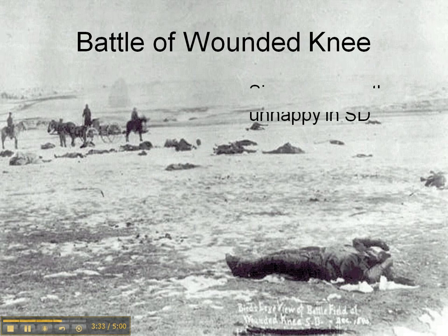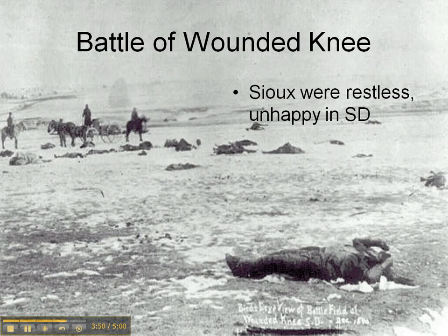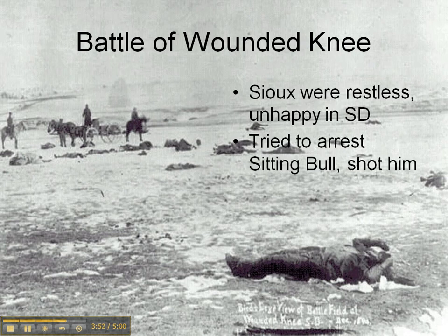The Battle of Wounded Knee involved the same tribe, the Sioux. They were eventually rounded up after Little Bighorn and moved to South Dakota. Some had fled to Canada but were homesick for their lands and families, so they came into the reservation in South Dakota. Sitting Bull, who had fought at Little Bighorn, was not cooperating and not farming — he was seen as a bad example. When soldiers came to arrest him, they accidentally shot and killed him.